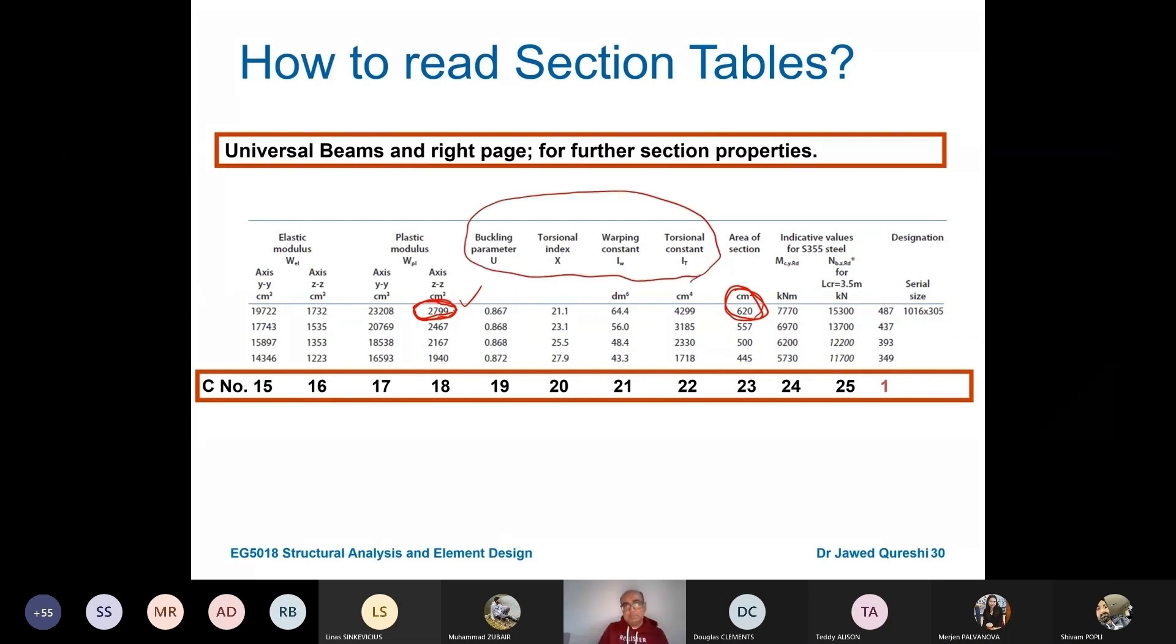Area of the section is given over here, which we will use to work out its axial capacity. When we design unrestrained beams, then we will use these torsional values. Once you choose the section, you will need this information and you will have to familiarize yourself with this section table.